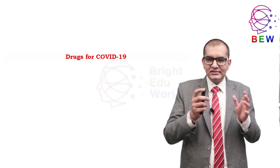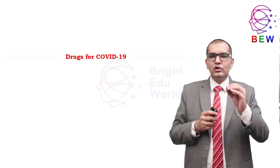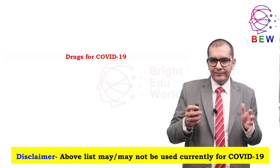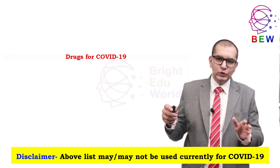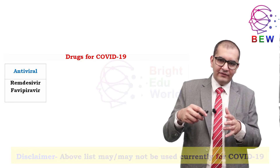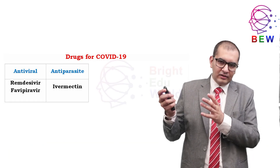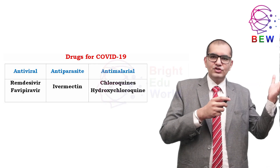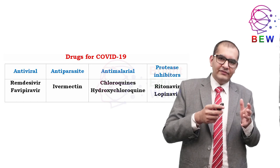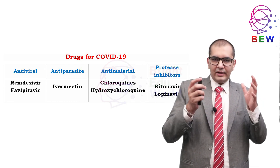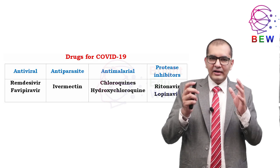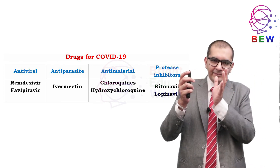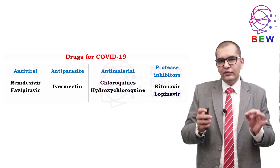In summary, these are the drugs used or currently being used for the treatment of COVID-19. Drugs like remdesivir, favipiravir, and ivermectin are currently used, while chloroquine and hydroxychloroquine were used initially. Lopinavir and ritonavir were used in some parts of the world but are not currently recommended.